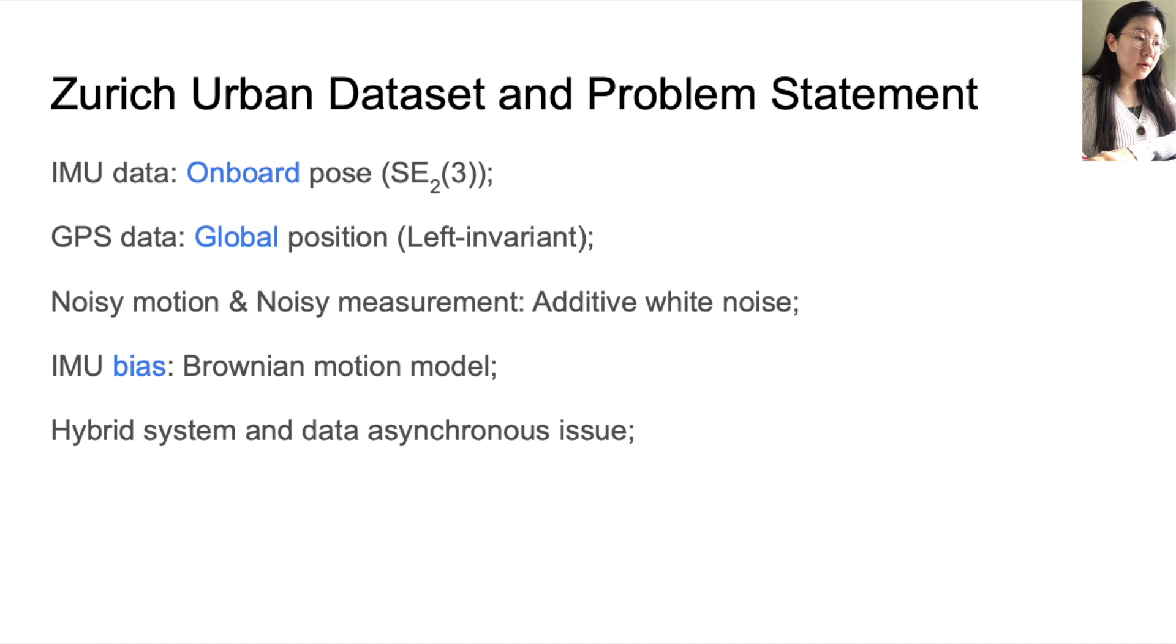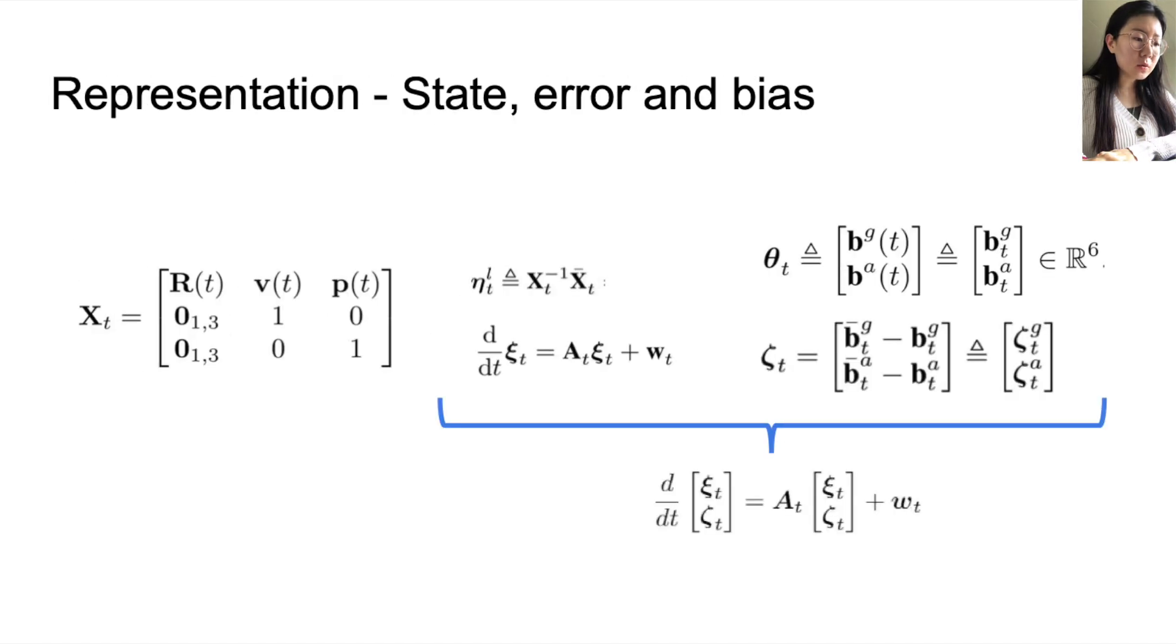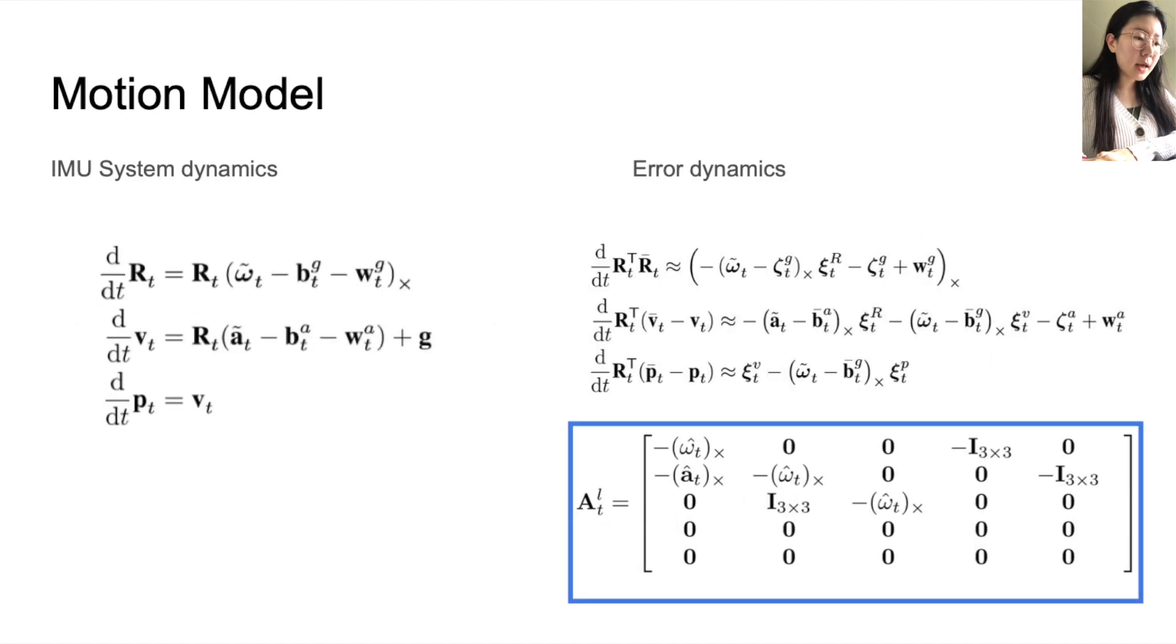Methods: from problem keypoints to model derivation. First, based on our data, we choose left-invariant EKF in SE23 and account for balance. Next, for our model, we augment bias with error and find the Jacobian A-matrix from system dynamics with log-linear property of error.